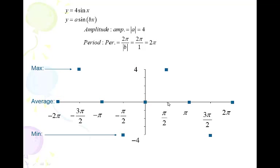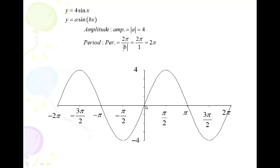This is the idea that we go from average to max, to average, to min, to average — in what are called quarter period increments. Every quarter period, we move from average to max, to average, to min, and back to average. It goes up and repeats itself over and over again. That's why I like to strike it off in four quarters.